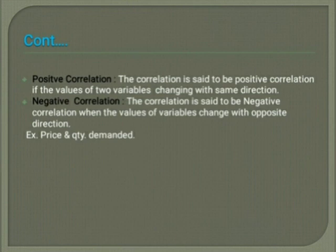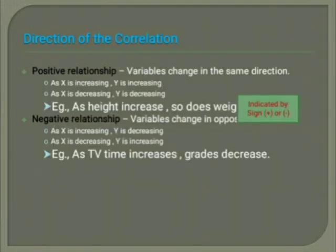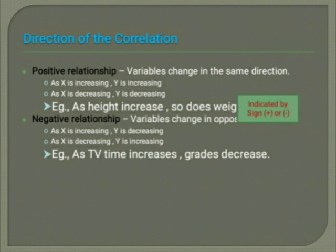Direction of correlation: In a positive relationship, if the variables move in the same direction — as x is increasing, y is increasing, and as x is decreasing, y is also decreasing — it is a positive relationship. In a negative relationship, if the variables change in the opposite direction, that is a negative relationship.